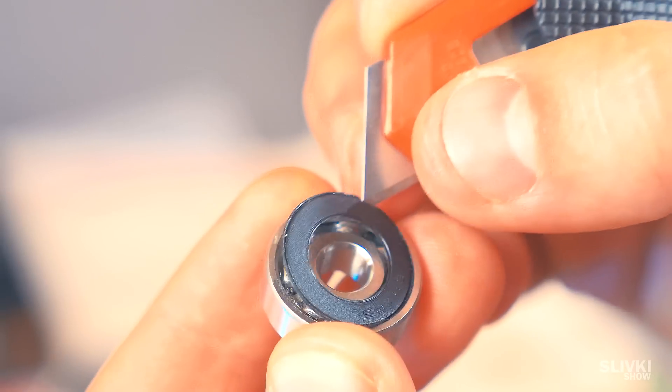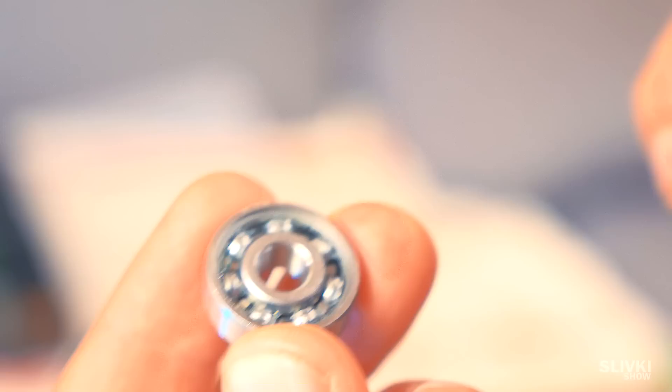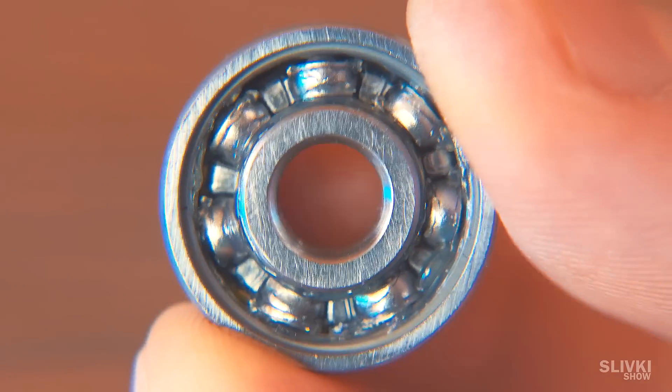At the same time we take a bearing and using a knife carefully get underneath this black ring. We can see a lot of grease inside, which should be removed.